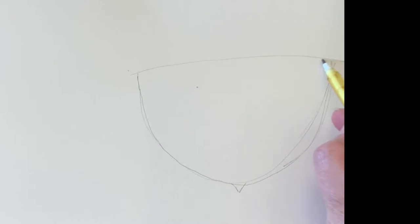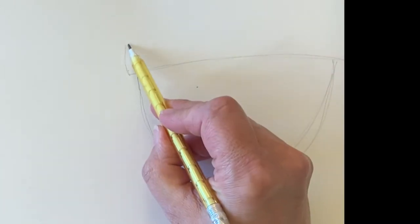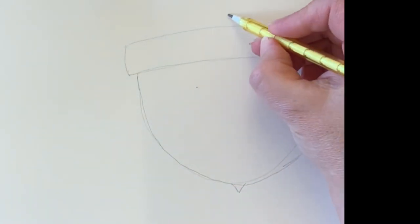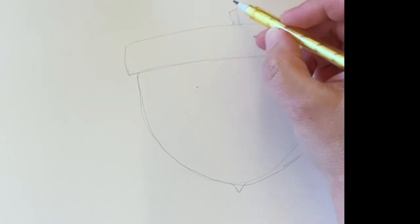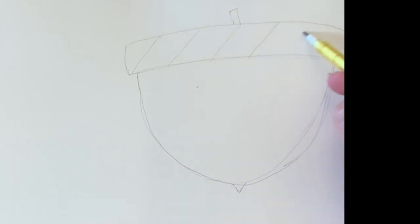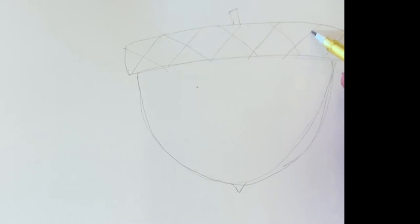There is my curved line on top. I'm going to make two curved lines on either side and connect them going over to the top. And a little rectangle on the top for the stem. Some diagonal criss-crossing lines will help make it look like an acorn cap.